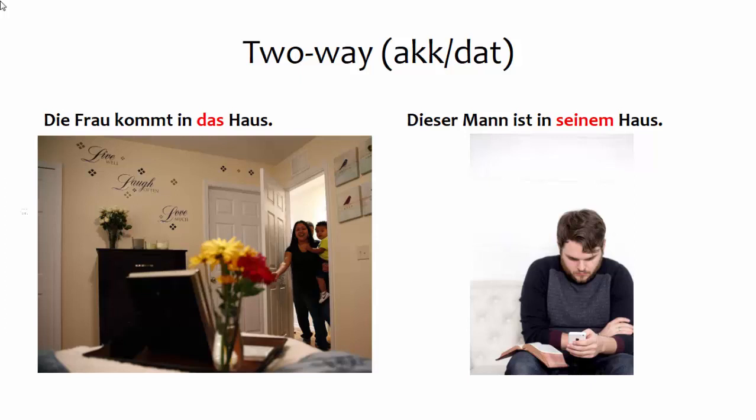For example, the preposition in can show both motion and location. It is therefore a two-way preposition. When it's used to show motion, it requires the accusative, as in the scene on the left. When it's used to show position, it requires dative, as in the scene on the right.